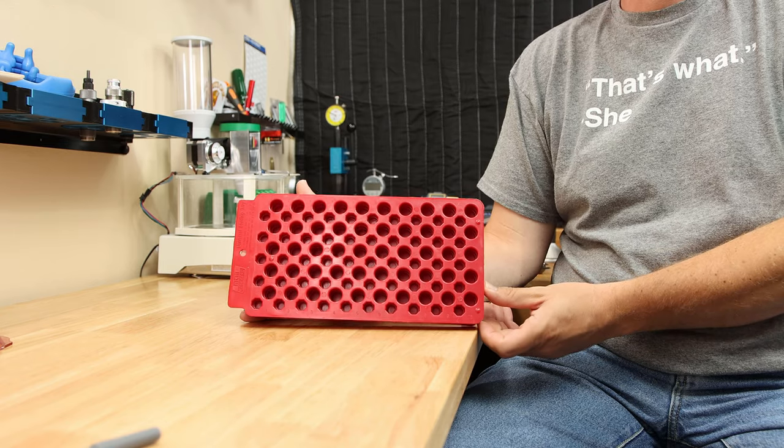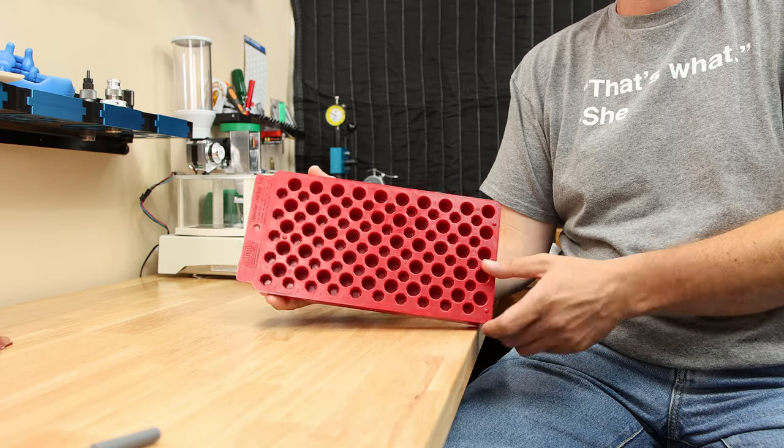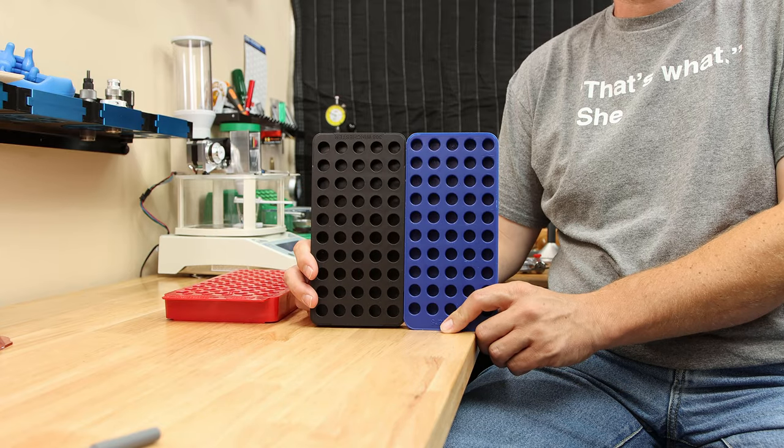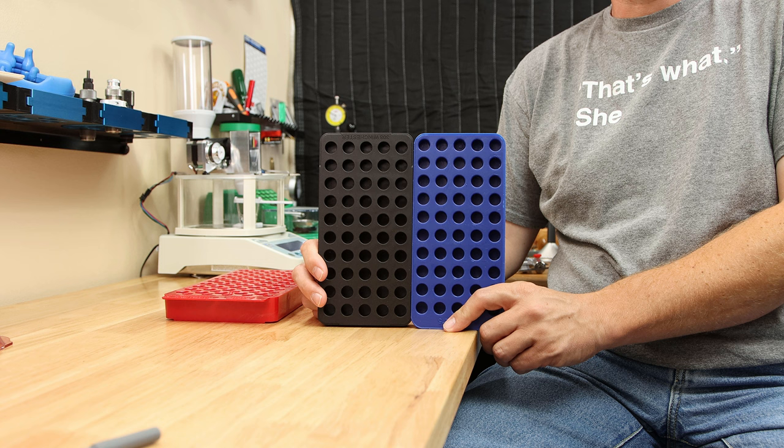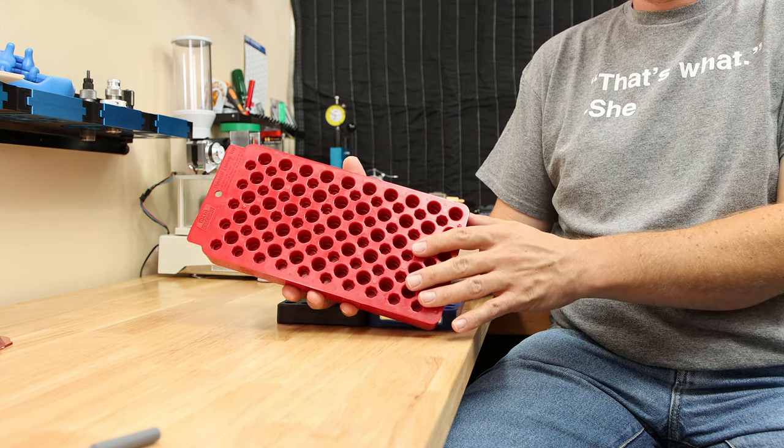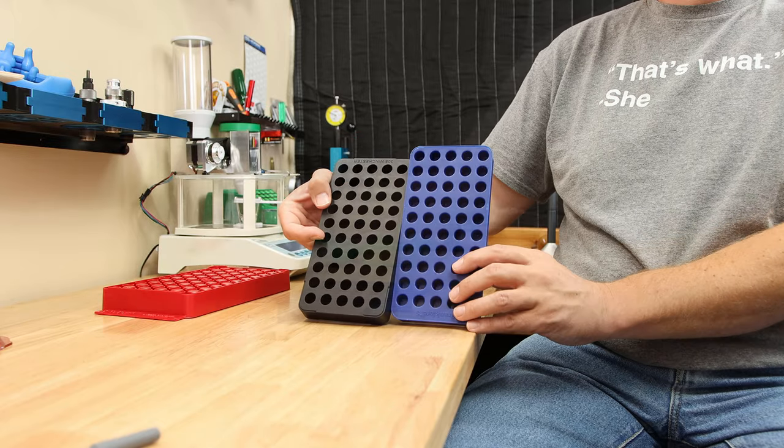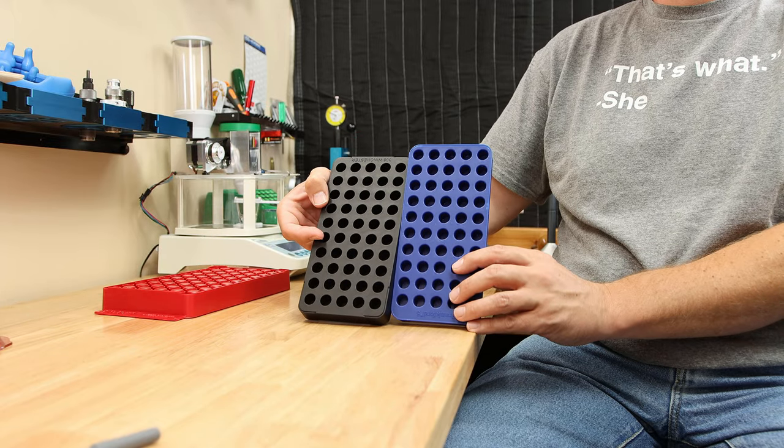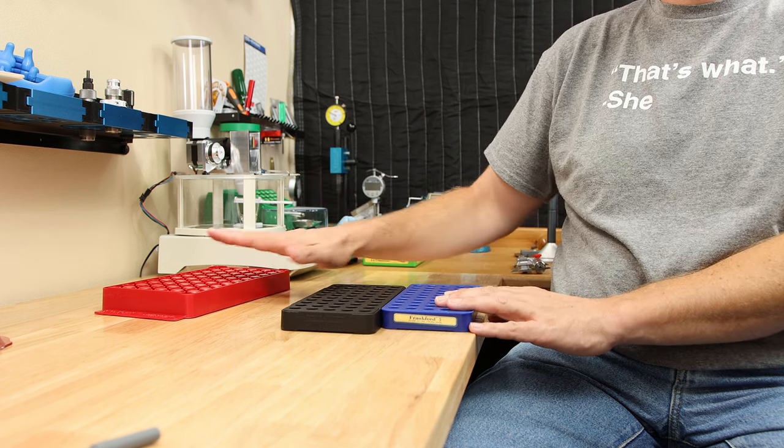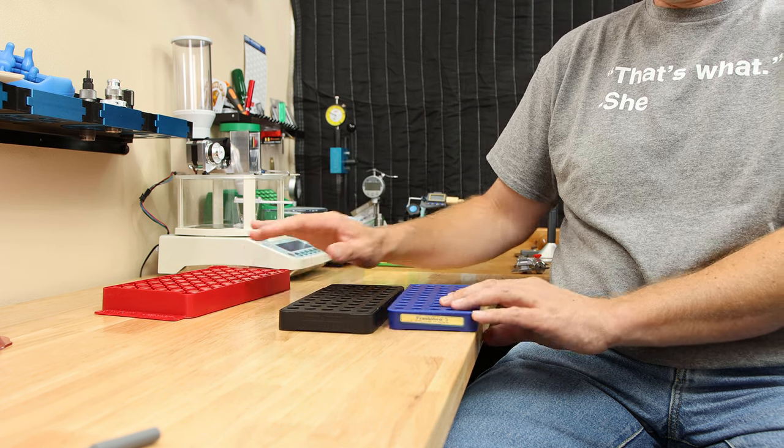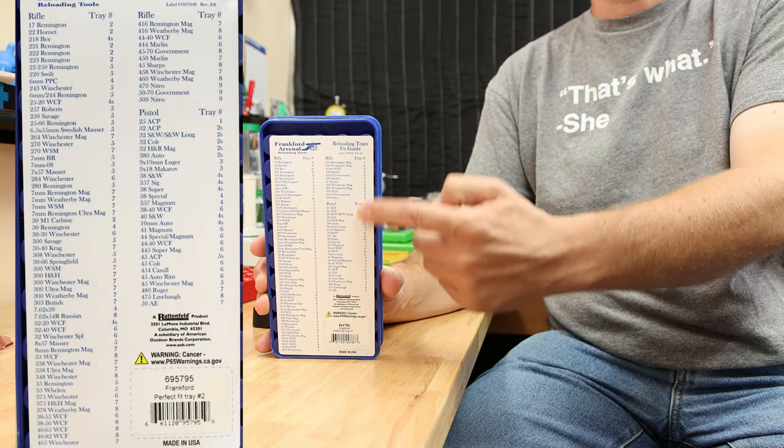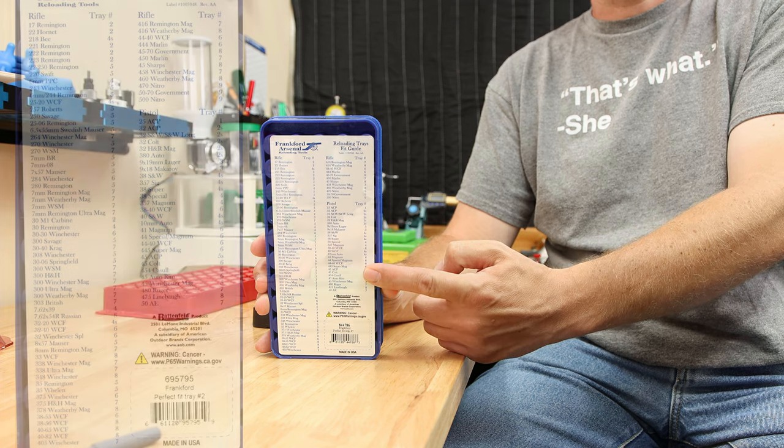A couple of other nice things to have are universal reloading trays, and clearly they handle multiple calibers. But there are caliber-specific reloading trays, and these are very nice if you're loading a very specific cartridge. The universal blocks right now are running somewhere in a ballpark of $5. Some of these caliber-specific reloading trays run somewhere around $8. So it might be a couple extra dollars, but in some cases they just do a better job than your universal tray. And your Frankford Arsenal actually has a list on the bottom of the tray of all the different calibers and which number corresponds to which caliber.